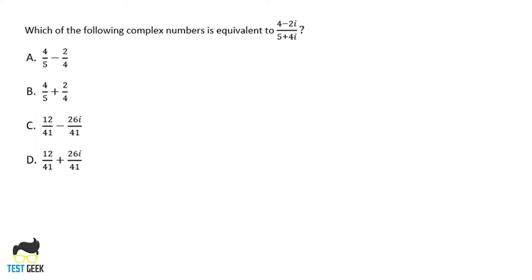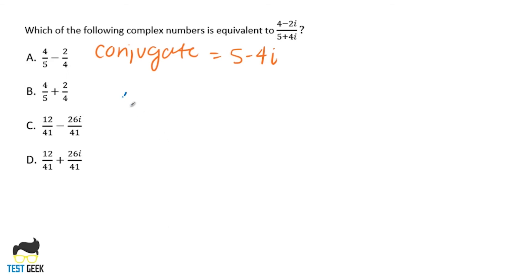Let's look at another problem. This one looks pretty tough — we know we need to simplify it, but it's unclear exactly how. The good news is that this exact style of question is fairly common for imaginary number problems on the SAT or ACT, so this trick should serve you well on either test. In mathematics, you may have heard of the conjugate. The conjugate of our denominator is 5 minus 4i — we're just flipping the sign. We can simplify this expression by multiplying the top and the bottom by the conjugate of the denominator.